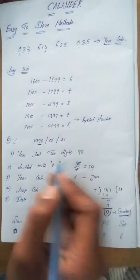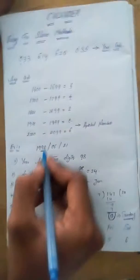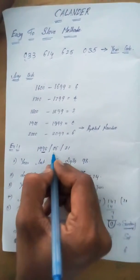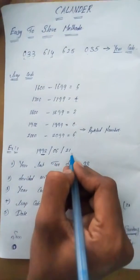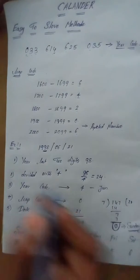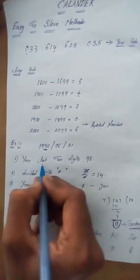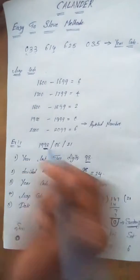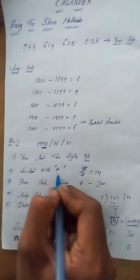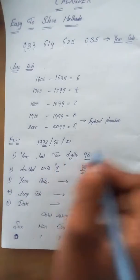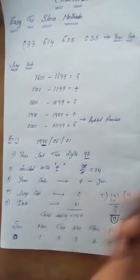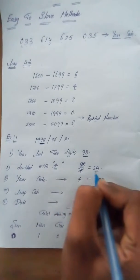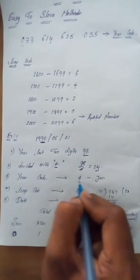For example, let's solve 1998/06/21. Take the last two digits: 98. Divide 98 by 4 for the leap year calculation, since leap years repeat every 4 years. 98 divided by 4 equals 24.